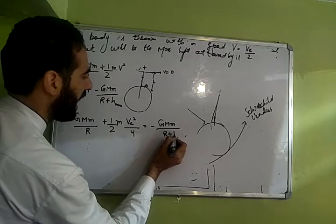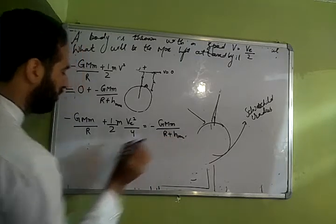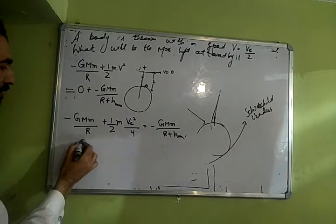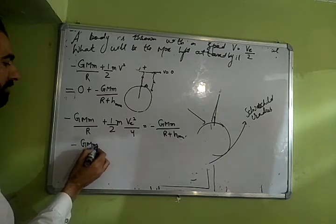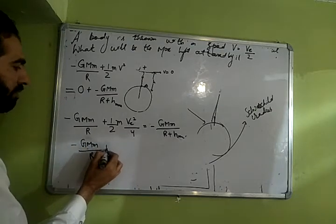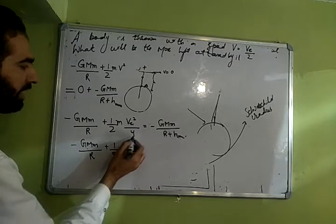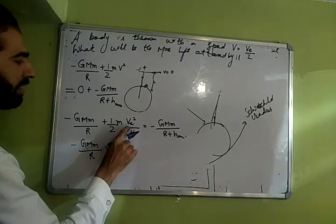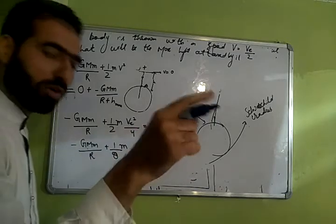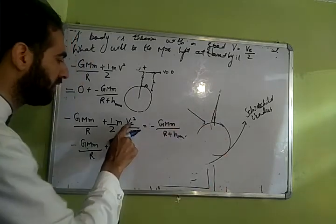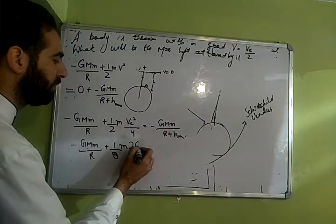Shabash is equal to minus g capital M small m divided by r plus h max. Ok to is ko value de. v kis ke barabar hota? Plus half of 1 by 8 m. Bolou beta v square ko kya likhe? ve is root of 2 gm by r, so ve square is 2 gm by r.